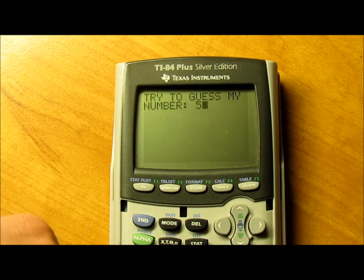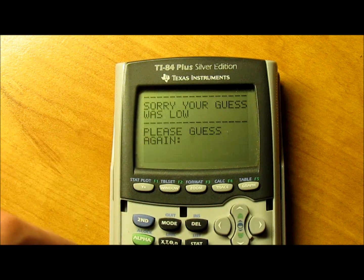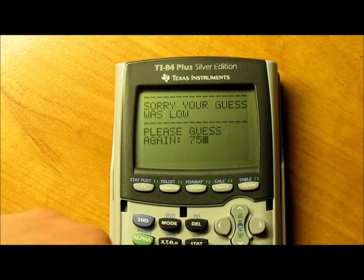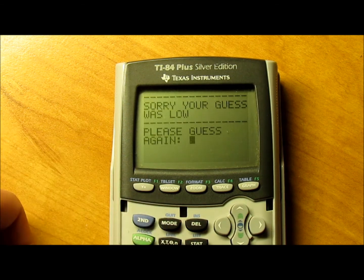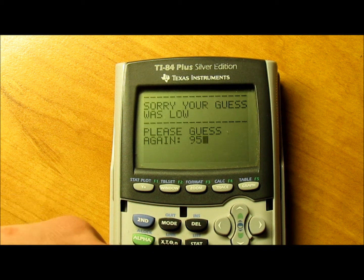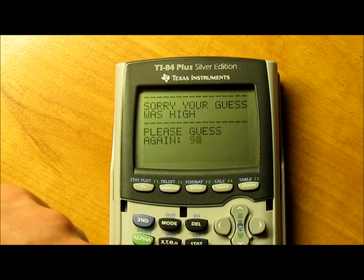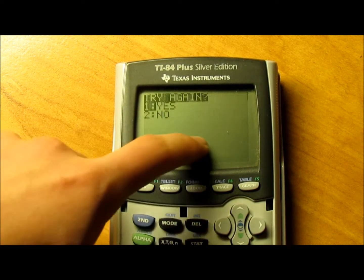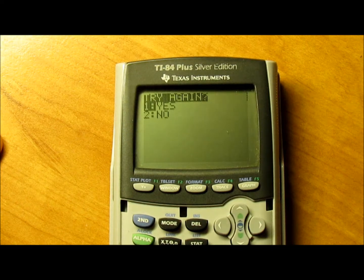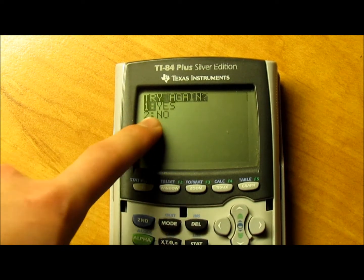I'm going to say 50. It says your guess was low, please guess again. So 75, still low. 89, still low. 95, still low. 99, that's high. 98, all right. It says that was the right number, it took me six tries, it waited for a second, and then asks would you like to try again?